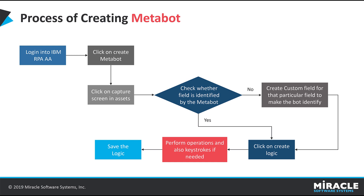When a text box cannot be identified by the MetaBot, we go for creating a custom field, which we create ourselves — indirectly telling the bot to identify that field. After creating the custom field for that particular field, we again click on Create Logic, perform the necessary operations, and save the logic.